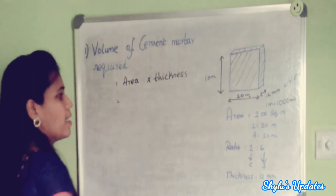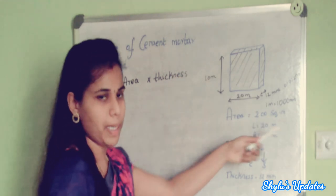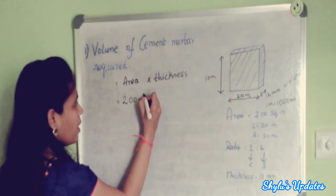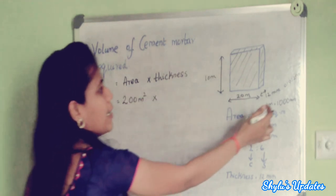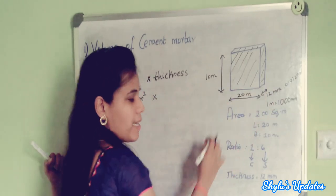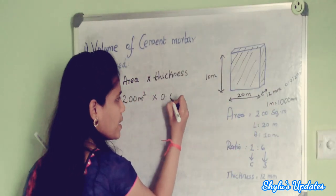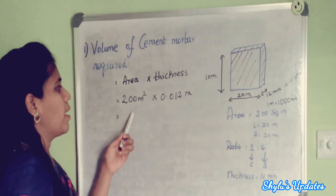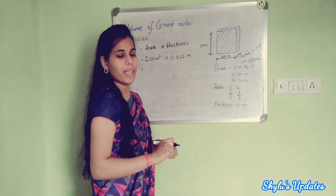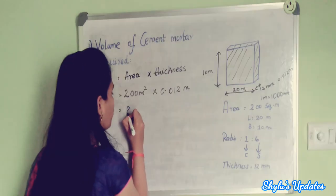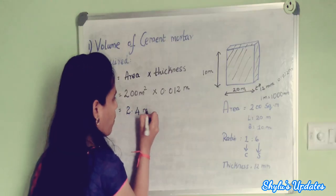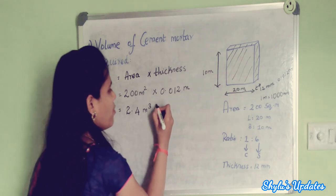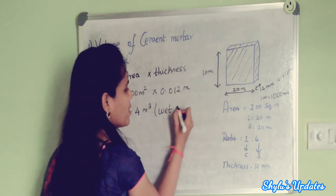Area is 200 square meters into thickness of 0.012 meters, which gives us 2.4 cubic meters. This is the wet volume of cement mortar.